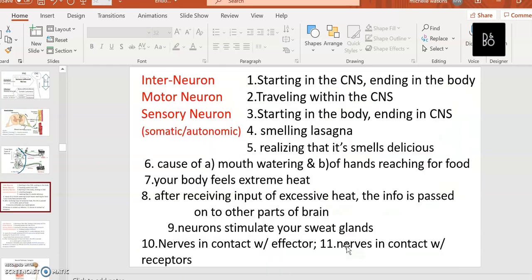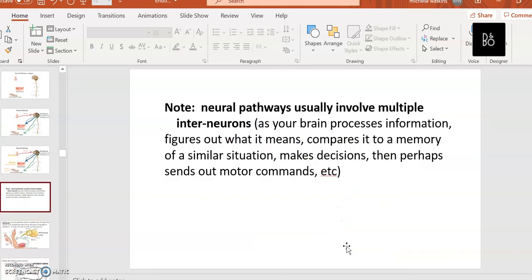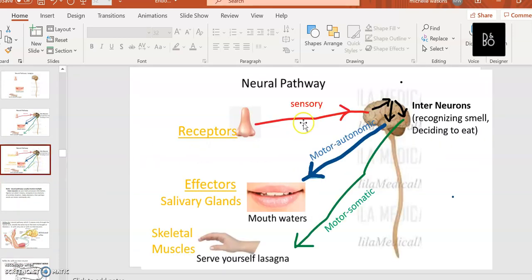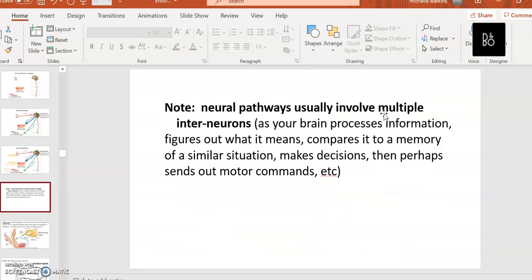What we just studied was a neural pathway. Notice that I drew three interneurons here - often there'll be many more. It's a very complex thing to recognize something, to remember it, to decide what to do about it. So neural pathways usually involve multiple interneurons as your brain processes information, figures out what it means, compares it to a memory of a similar situation, makes a decision about what to do, sends out a motor command telling your muscles to implement whatever you've decided to do.